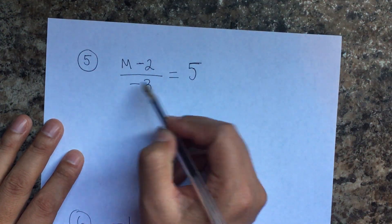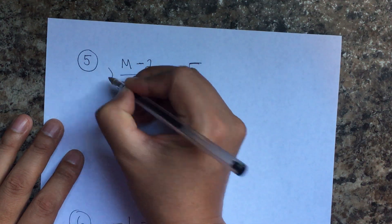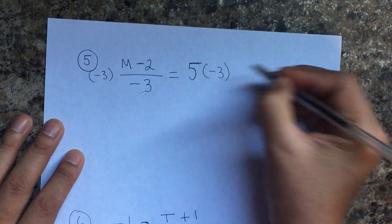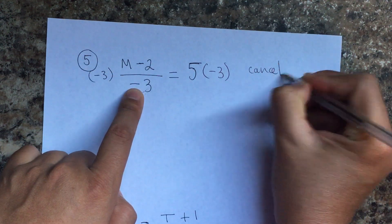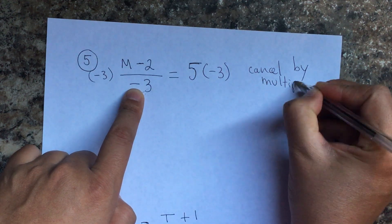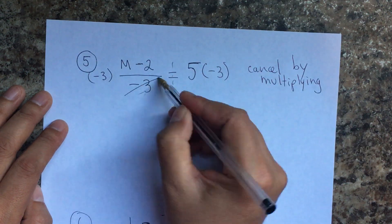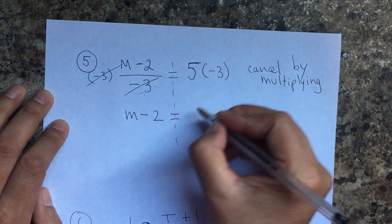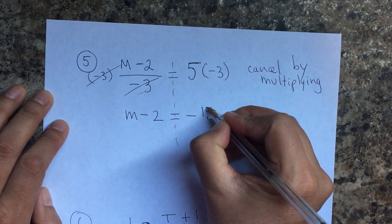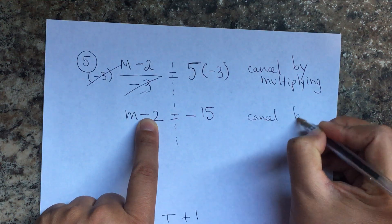Let's do more examples where we have everything over a number, meaning we cannot cancel the adding or subtracting first — we need to cancel that division first. If we're dividing by negative three, the opposite is to multiply by negative three. Remember in multiplication and division we multiply with the same sign. Cancel by multiplying. If I multiply on one side I have to multiply on the other side. So m minus two equals positive times negative — negative five times three is fifteen.